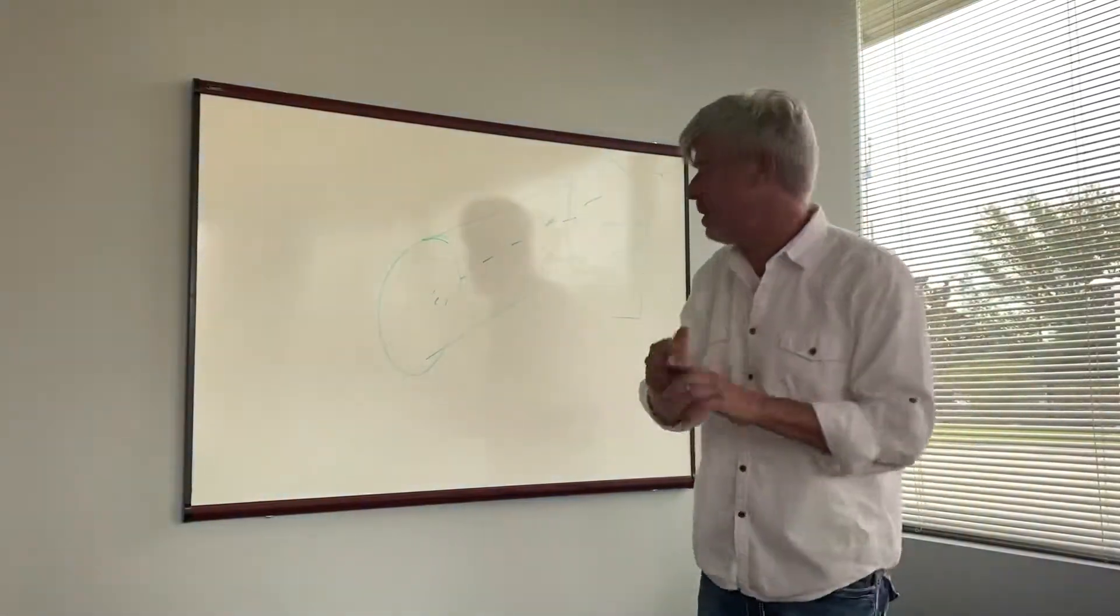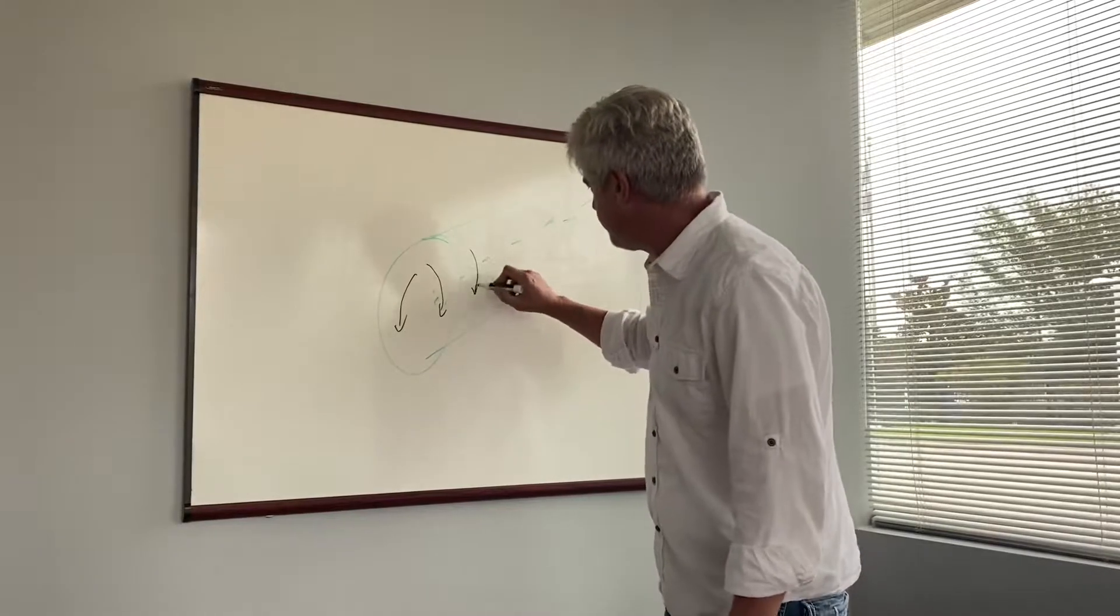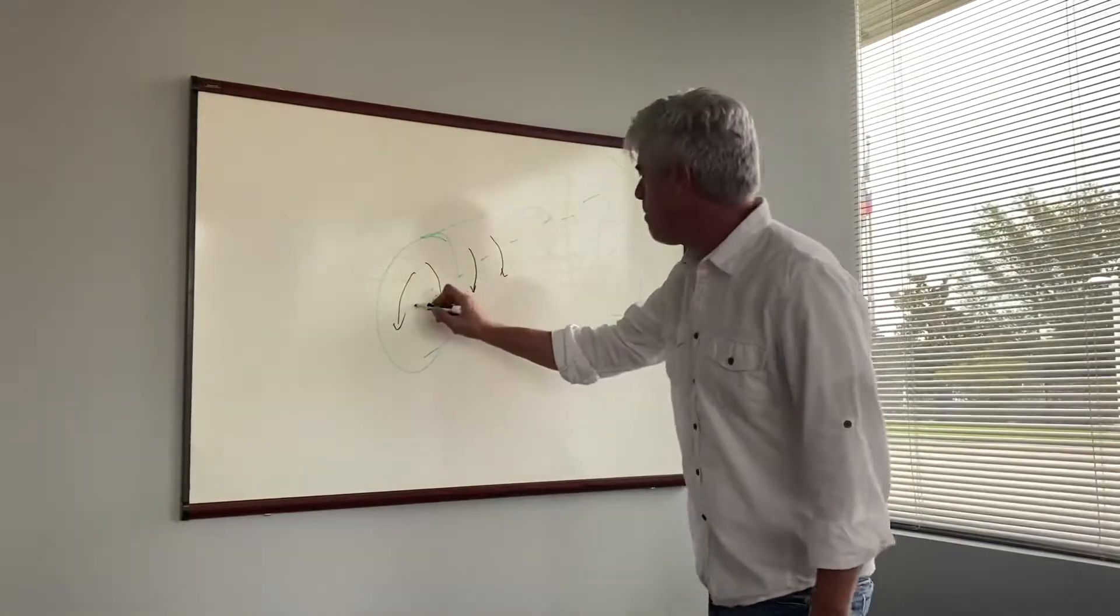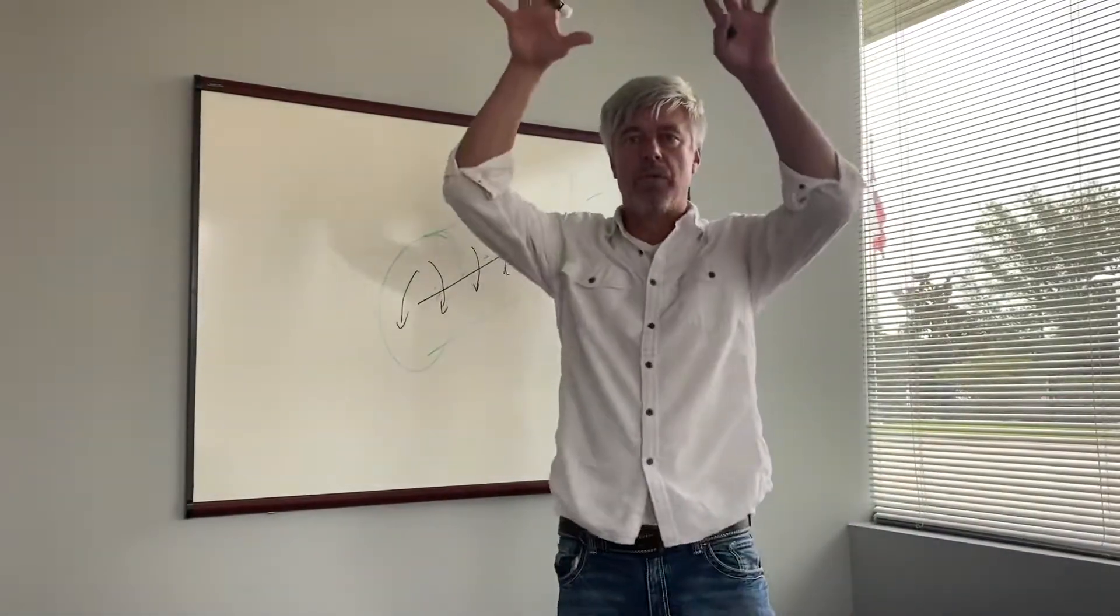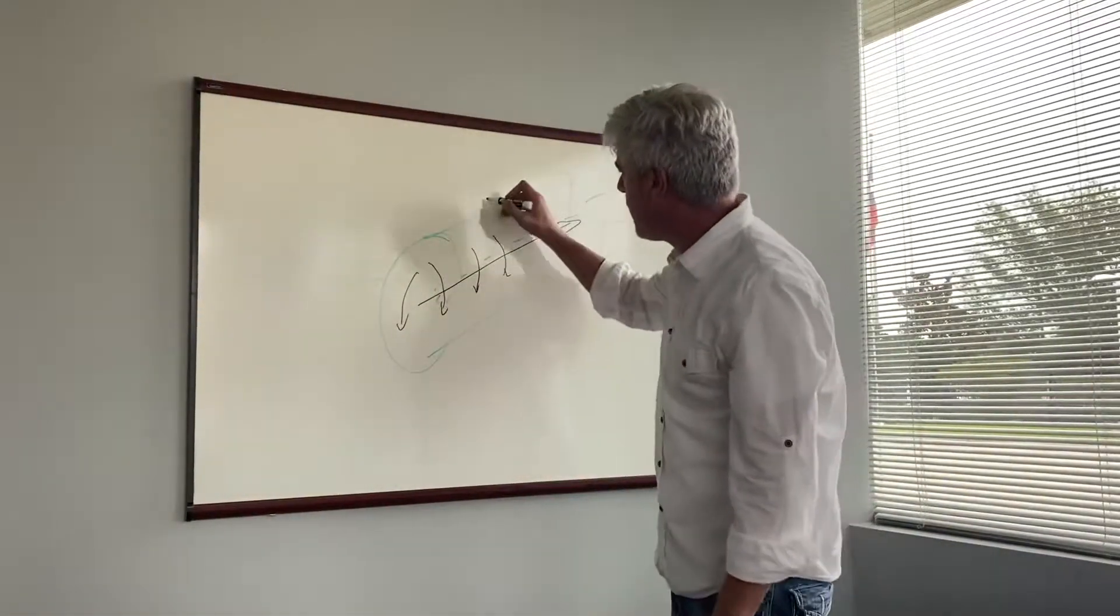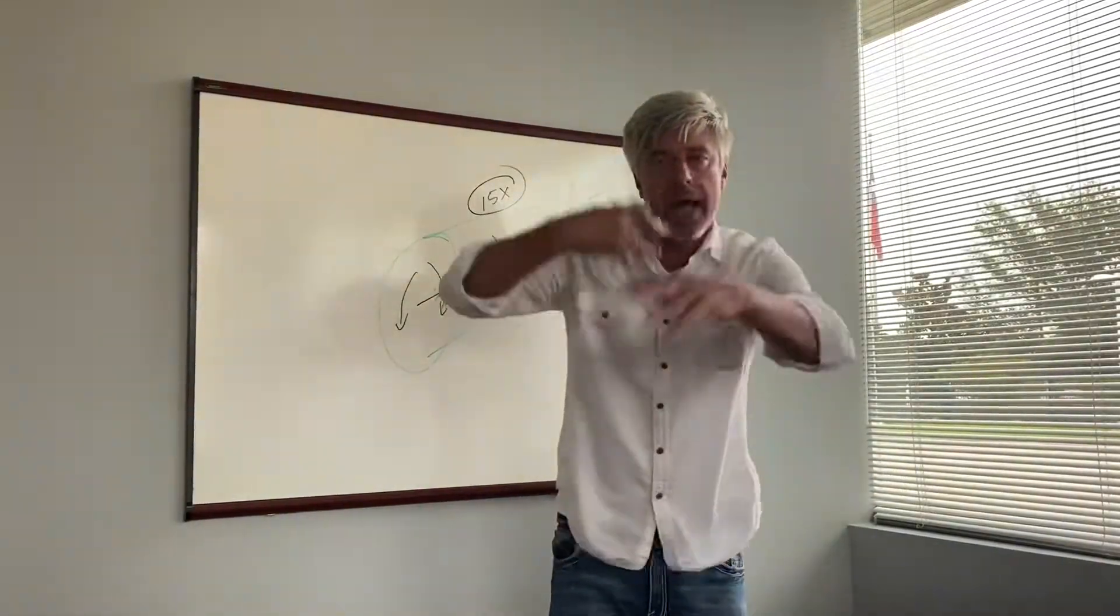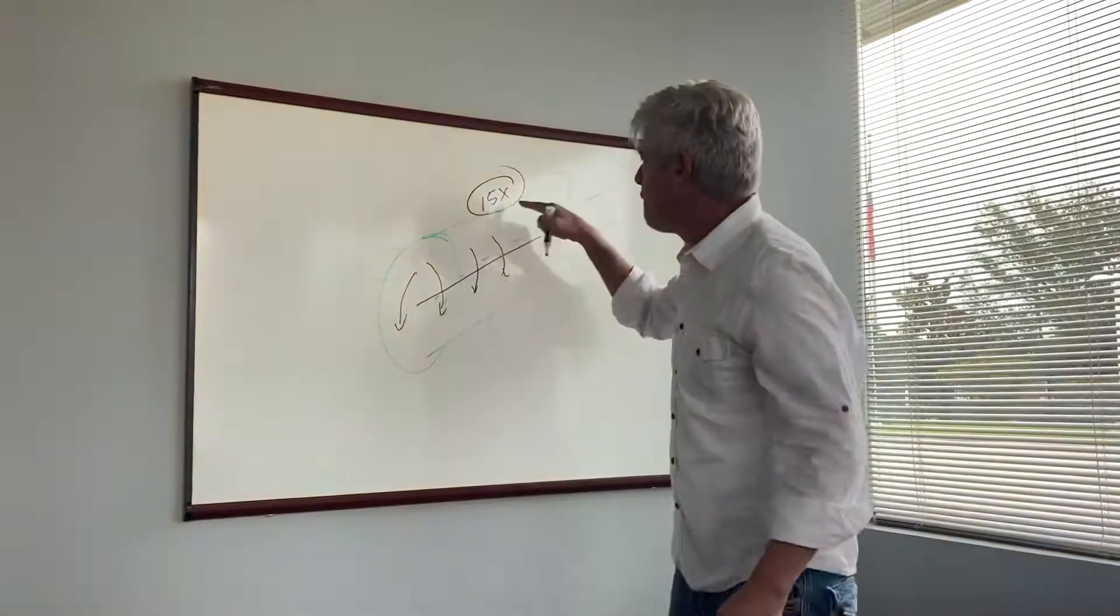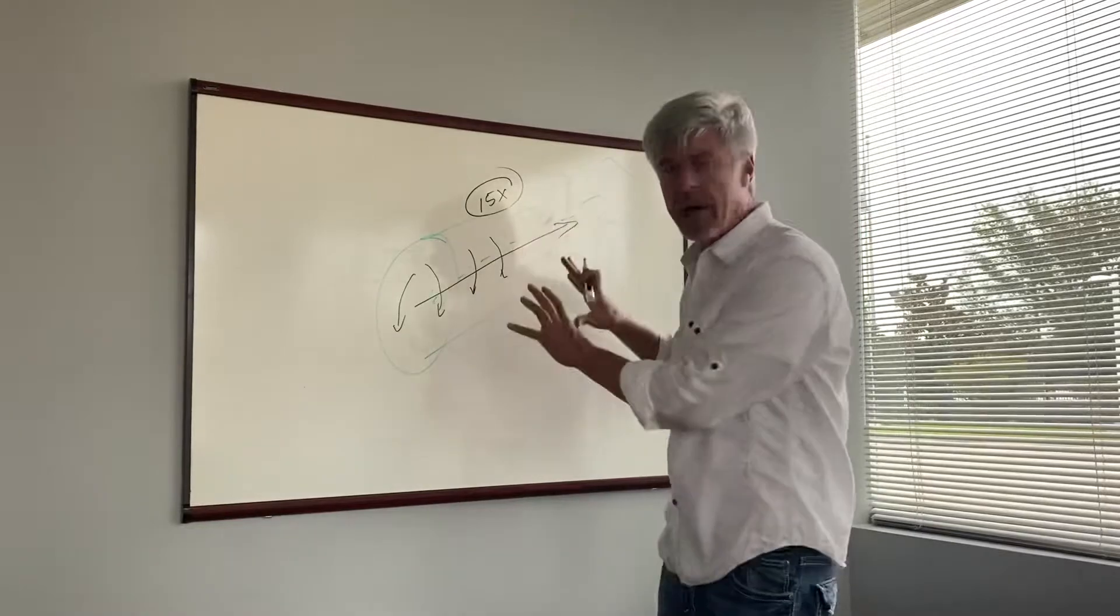Because something very important happens in all the commercial airlines. They have downflow. The air in a plane does not move with horizontal flow. It moves down. Number one. And number two, the air is exchanged, which means new air is brought in 15 times an hour.